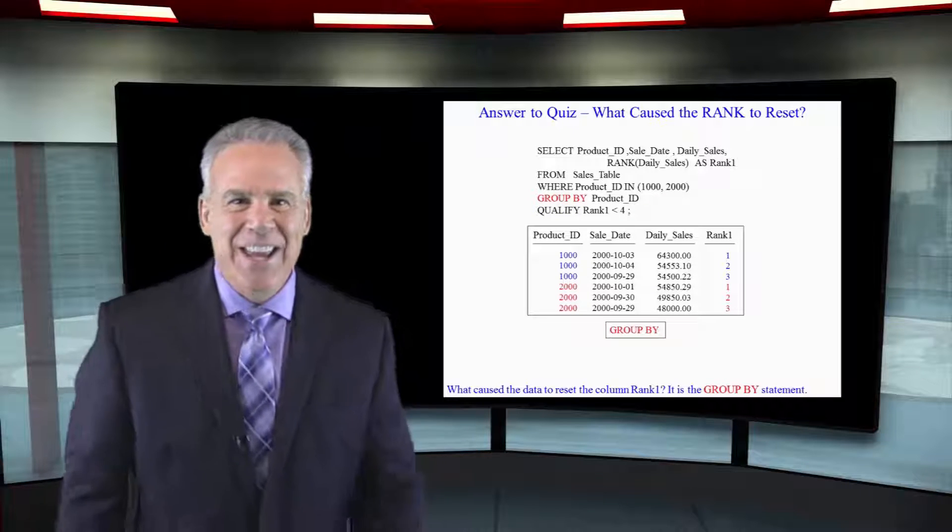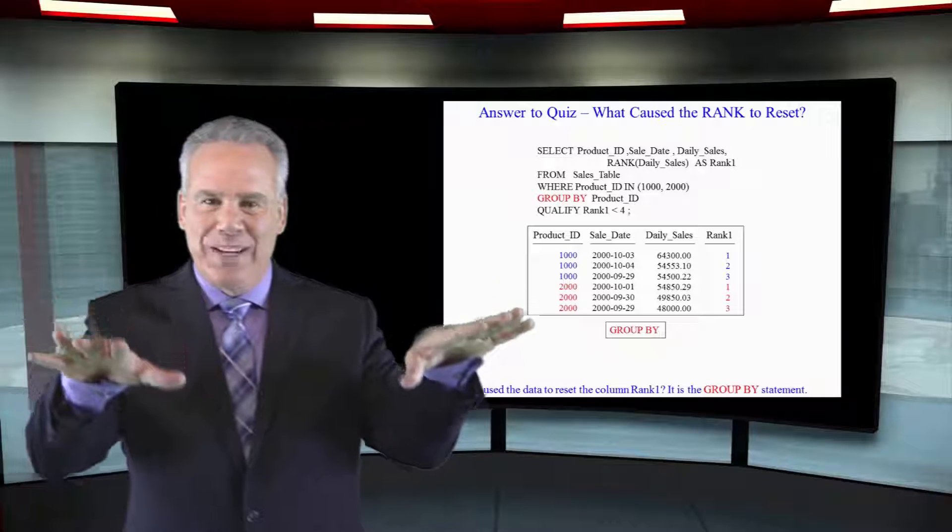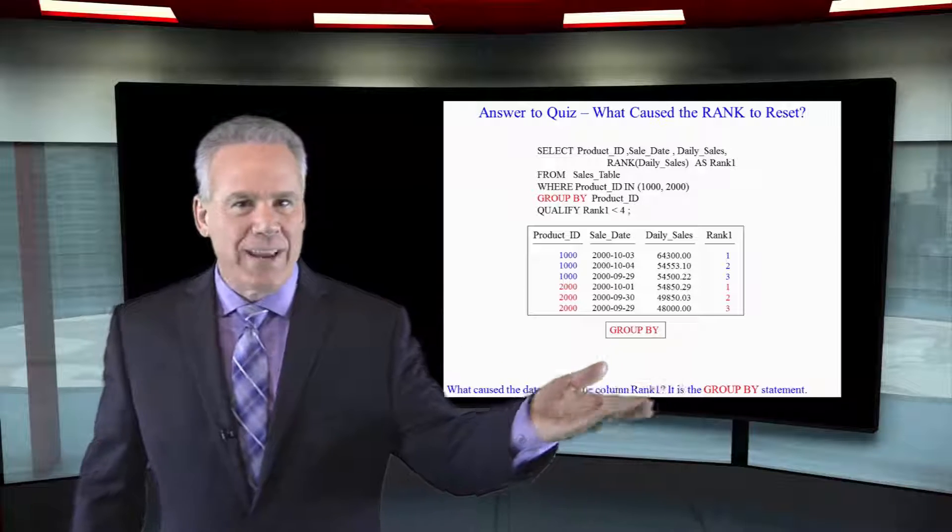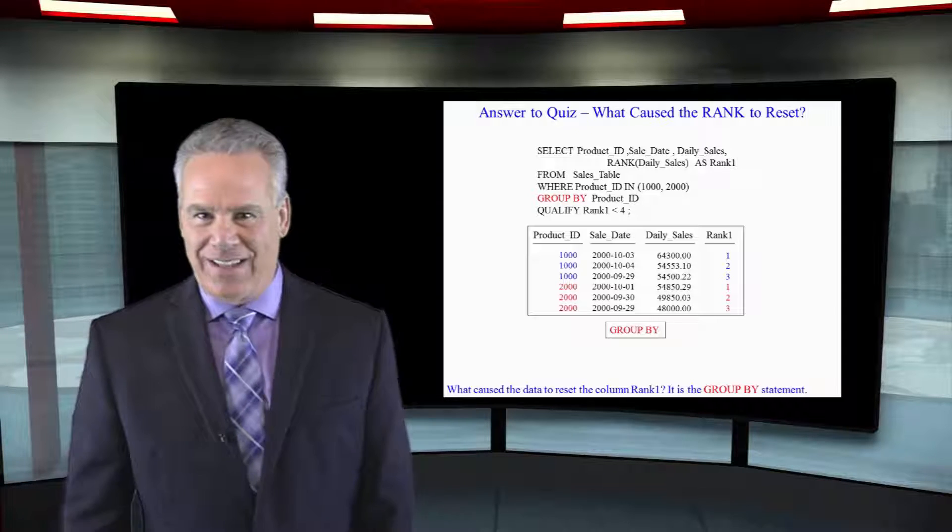Since this rank is using Teradata syntax, it's that GROUP BY that resets on product ID. And of course, the QUALIFY statement is now only going to give me the top three rows per product ID.